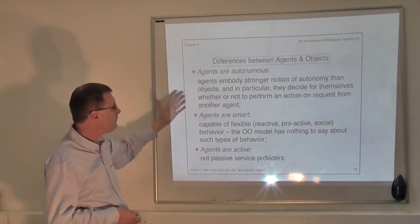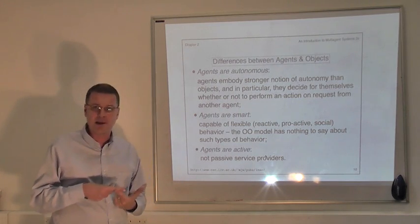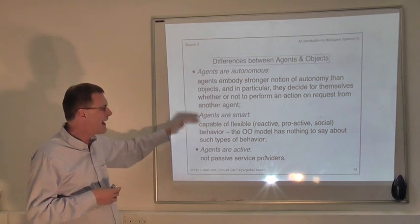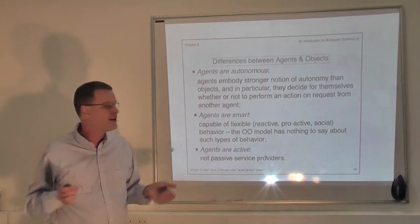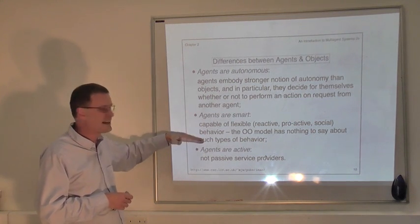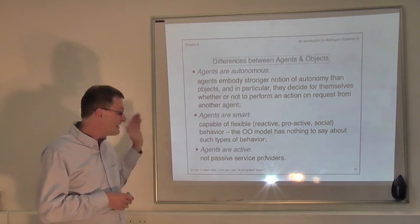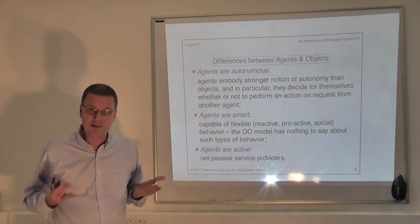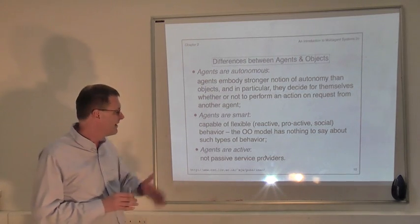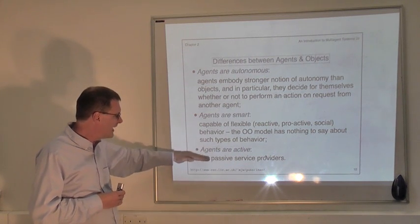Beyond that, we've been talking about agents as being reactive, proactive, and social. Those concepts have no parallel in the object-oriented world — they simply don't appear and have nothing to do with object-oriented programming. The OO model has nothing to say about being reactive, proactive, or social. This doesn't mean you can't build those capabilities using object-oriented programming languages, but the standard object model has nothing to say about it.